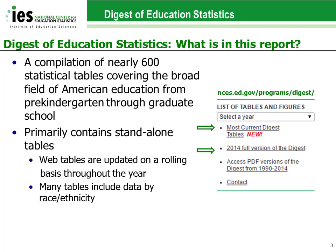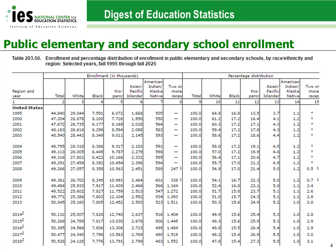One of the primary NCES sources for data by race and ethnicity on a wide variety of education topics is the Digest of Education Statistics. This report contains over 600 tables, many with racial and ethnic breakouts. While a full PDF of the report is released every year, the website is the best resource for the most up-to-date versions of the tables. Here is an example of a digest table that shows student enrollment in public schools by race and ethnicity over time.